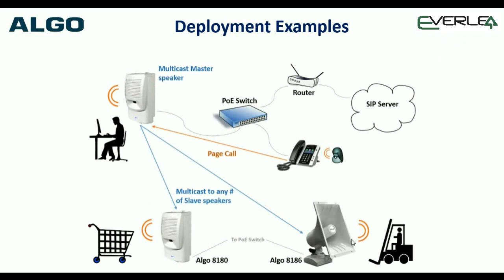In a multicast scenario: if we've got a SIP server in the cloud, we've got a router going through the PoE switch, a multicast master speaker receiving the page from a local call dialing the SIP number - it goes through the SIP server to the master and pages out to the various devices. The point is you can put the specific device you need for each area - for example, the 8186 in a warehouse area or open bullhorn area where it might be exposed to weather. Just horses for courses.